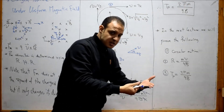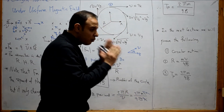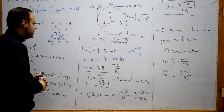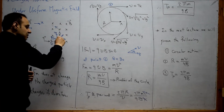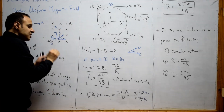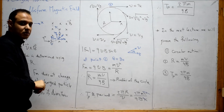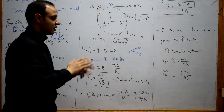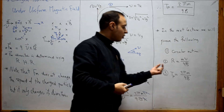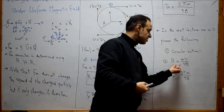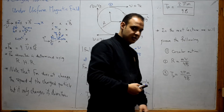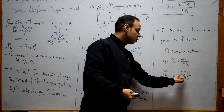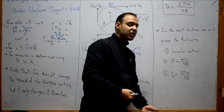In the next lecture, we will prove mathematically that this motion is exactly circular — that the trajectory of the electron will be precisely a circle. We will also prove that this circle has radius r = mv/qB, and that the time period T = 2πm/qB.